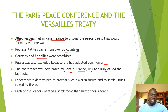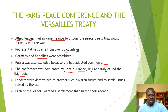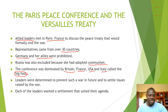The countries that dominated this meeting were Britain, France, USA, and Italy. The leaders of those four countries are called the Big Four. Basically, they wanted to prevent a future war, because this war had caused so many casualties and problems. Among the Big Four, everyone had their own agenda.